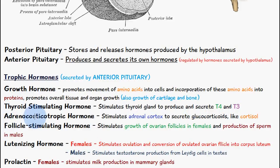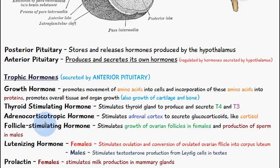Adrenocorticotropic hormone stimulates the adrenal cortex to secrete glucocorticoids like cortisol. Follicle stimulating hormone stimulates the growth of ovarian follicles in females and the production of sperm in males.